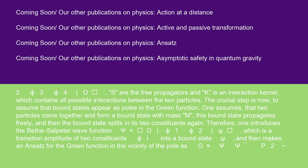The crucial step is now to assume that bound states appear as poles in the Green function. One assumes that two particles come together and form a bound state with mass m. This bound state propagates freely, and then the bound state splits in its two constituents again. Therefore, one introduces the Bethe-Salpeter wave function psi equals omega phi1 phi2 psi, which is a transition amplitude of two constituents phi into a bound state psi.